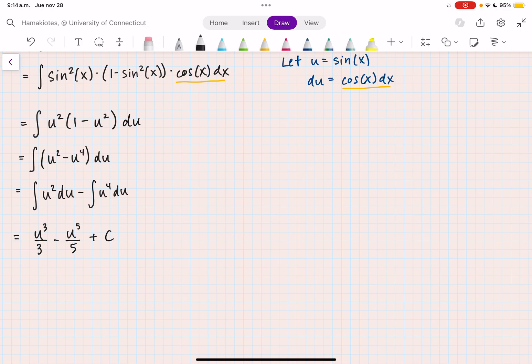I can't forget to plug in what u actually is. So this becomes sine cubed of x over 3 minus sine to the fifth of x over 5 plus c.